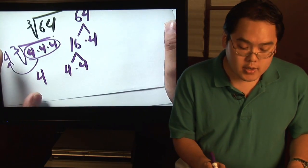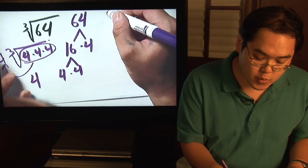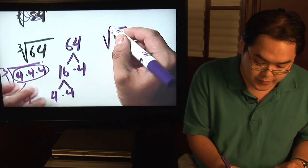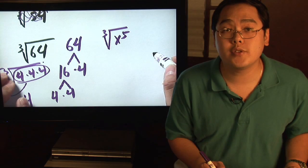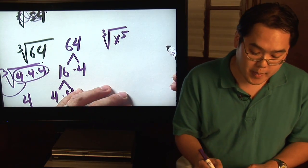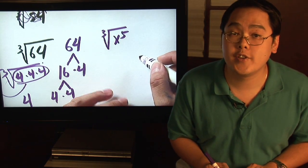Here's one involving variables. Suppose you wanted to find out the cube root of x to the fifth. For variables, it's actually pretty straightforward as well. You actually treat it as a long division problem.